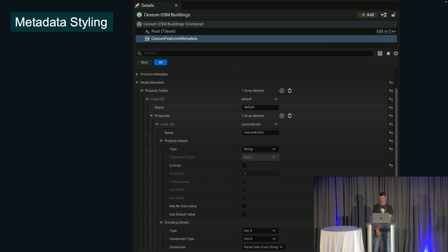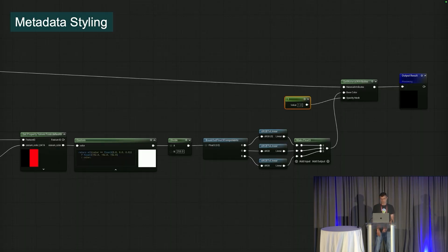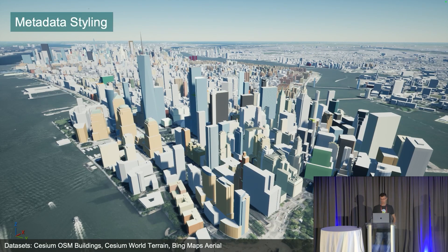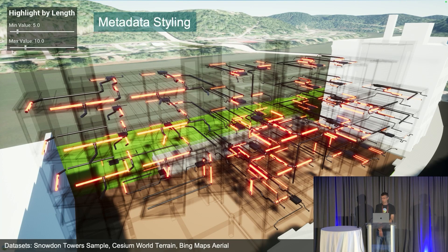Next up: metadata styling. You add the CZM features metadata component, which lets you take a tile set like CZM OSM buildings that has metadata embedded in it. CZM for Unreal generates a skeleton material layer to obtain at runtime the metadata properties you designate, and then you can add custom nodes to a material to use those properties however you see fit. This produces some pretty cool metadata-driven visualizations — for example, buildings shaded according to a property associated with each building, or a glowing effect applied to pipes whose length lies within a particular range that can be adjusted at runtime.